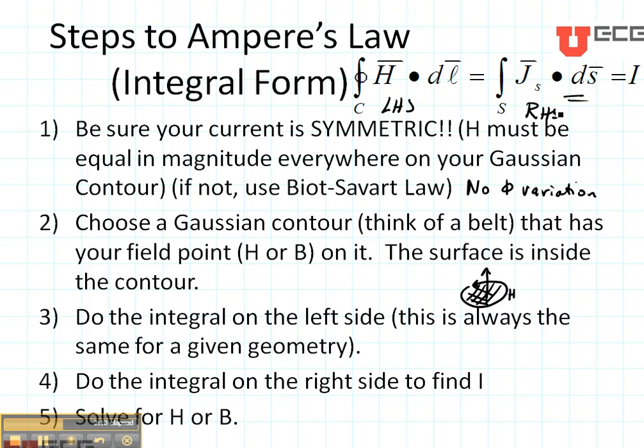Finally, equate the left hand side to the right hand side in order to solve for H. And remember that B is equal to mu H. So, if you know the material, the material properties mu, you'll be able to find the magnetic flux density B.